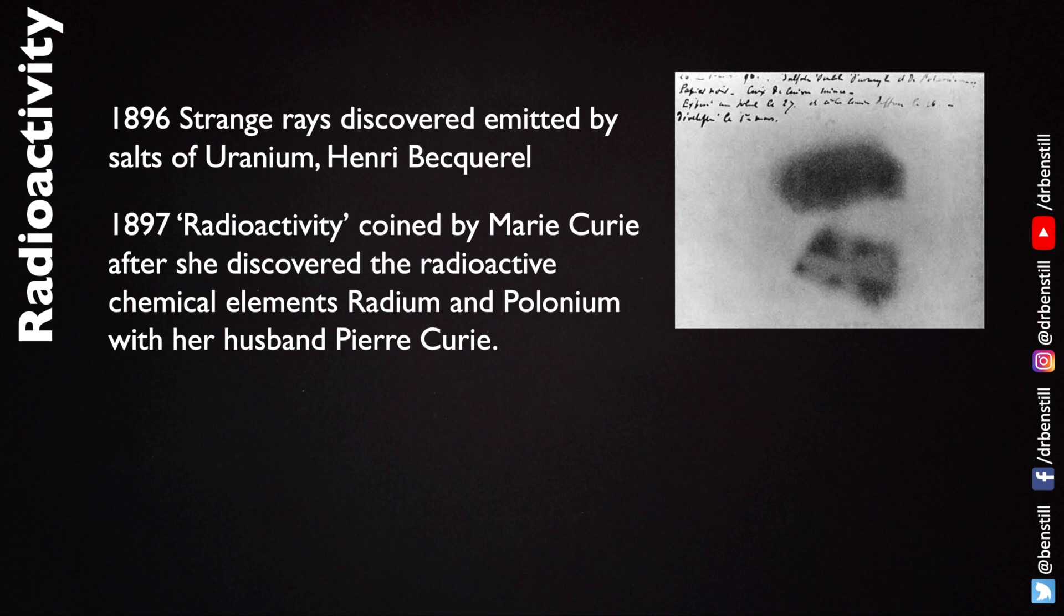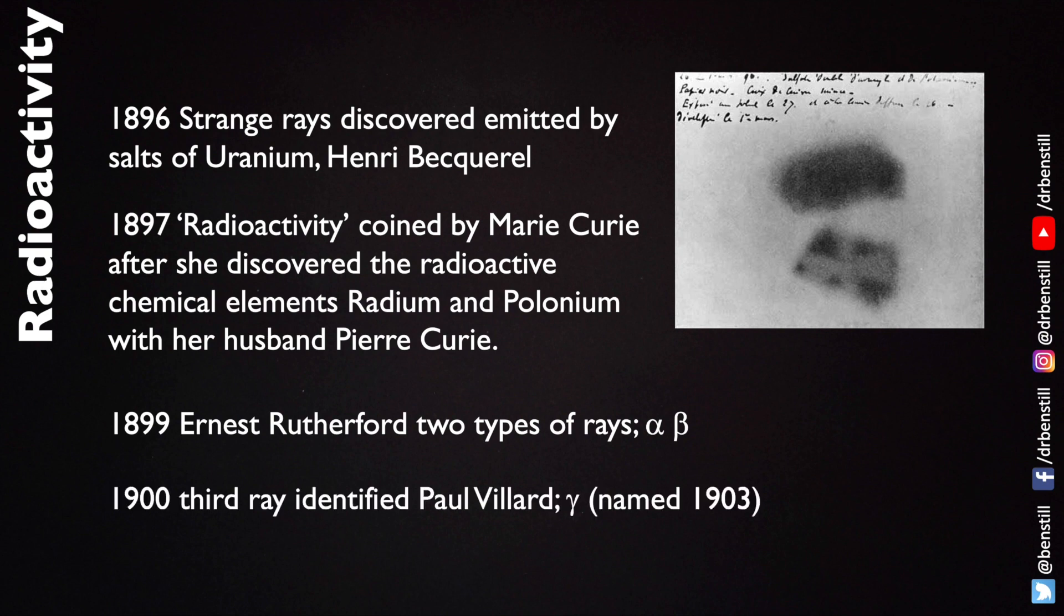In 1897 the word radioactivity was coined by Marie Curie after she discovered the radioactive elements of radium and polonium with her husband Pierre and it literally means that the atom is actively emitting radiation. In 1899 New Zealander Ernest Rutherford identified that there were not one but two different types of rays that seem to be coming from these elements and in 1900 a third ray was identified by Paul Villard. Ernest Rutherford named these three rays alpha beta and gamma.